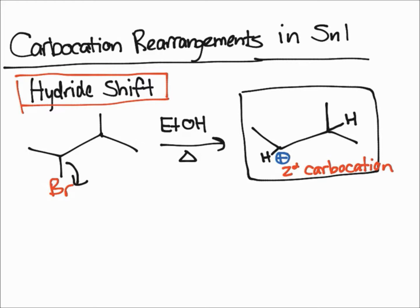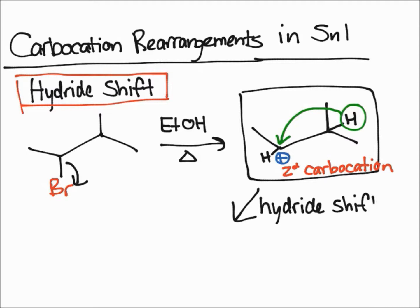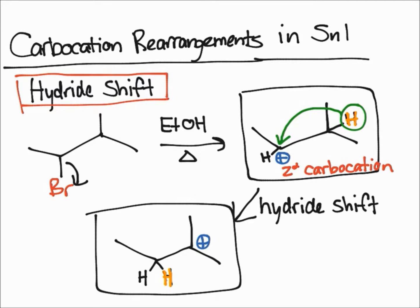What's going to happen is a hydrogen is going to shift — this one shifts and comes onto that carbon. It just trades places. After the hydride shift, the molecule looks like this. I've drawn the hydrogen that shifts in gold. You can see the positive charge shifts because this carbon no longer has four bonds, so that one becomes the carbocation.